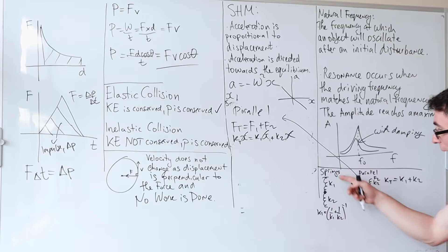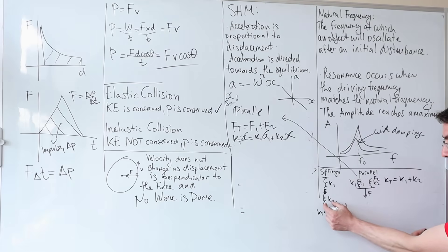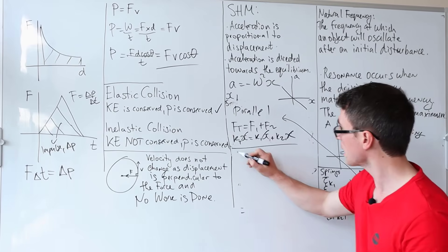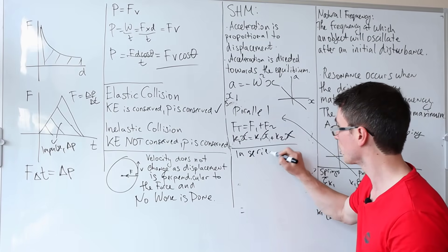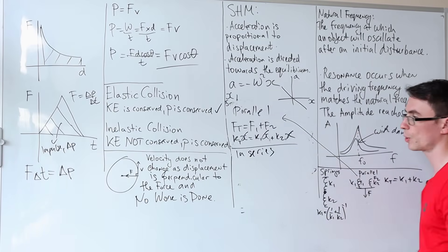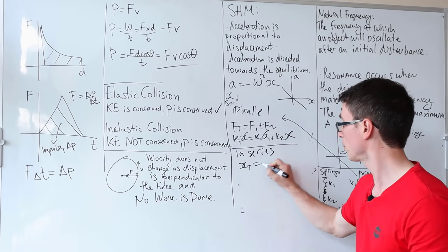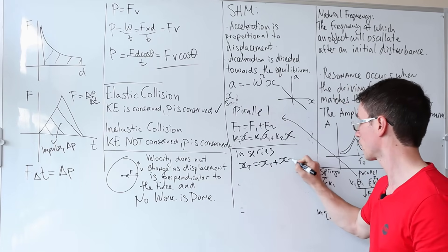Now, if they are in series, they have the same force that is applied to them. Because if I pull this spring down, the spring k₂ will experience the same force as the spring k₁, because they're directly connected to one another. So in series, what we add is actually the extension. So x_total = x₁ + x₂.